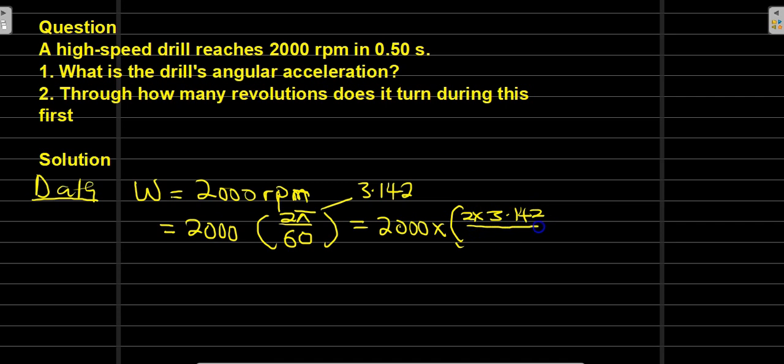After completing everything here, we are going to have 209.5 radians per second. Secondly, the time has been given to us.